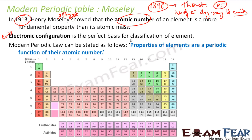Periodic law can be stated as: properties of elements are a periodic function of their atomic number. For example, an element with electronic configuration 2,8,2 — that means this element is in the third period.